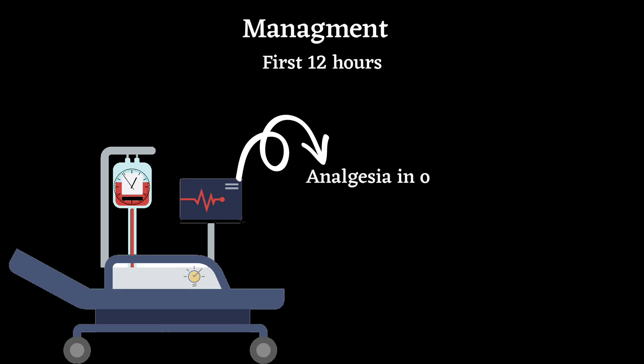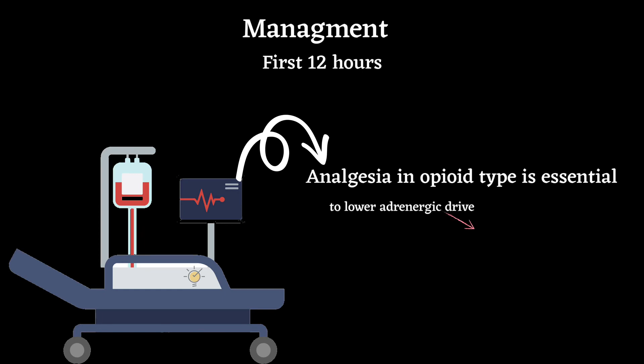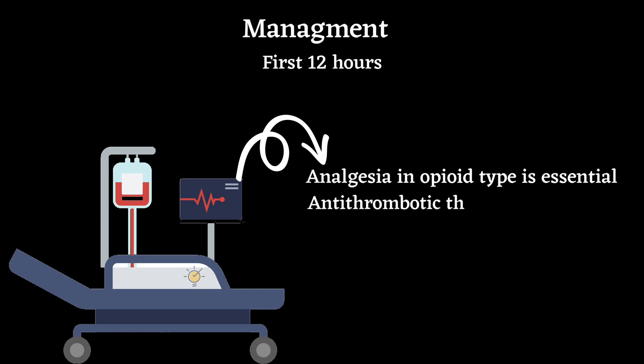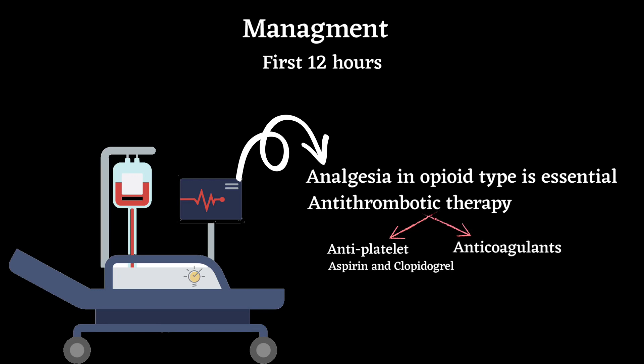In the first 12 hours, patients should be admitted urgently to hospital. Adequate analgesia with an opiate-type analgesic is essential not only to relieve distress but also to lower adrenergic drive, thereby reducing vascular resistance, blood pressure, infarct size, and susceptibility to ventricular arrhythmias. Antithrombotic therapy includes antiplatelet agents such as aspirin and clopidogrel, and anticoagulants such as heparin, which reduce the risk of thromboembolic complications and prevent reinfarction in the absence of reperfusion therapy.